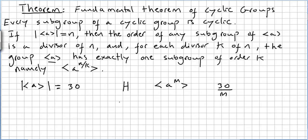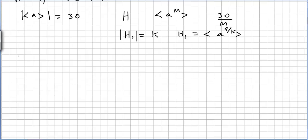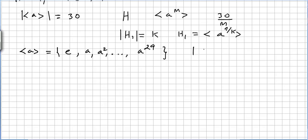And using this theorem, if you want a subgroup of order K, this subgroup H₁ will be generated by A. So let us say we have a group generated by A: the identity, A to the power of 1, A to the power of 2, and so on up to A to the power of 29. So the order of this group will be 30.